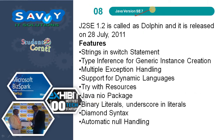Java 7 is released on 28th July 2011. Features include Strings in Switch statement, Type Inference for Generic Instance Creation, Multiple Exception Handling, Support for Dynamic Languages, Try with Resources, Java NIO Package, Binary Literals, Underscore in Literals, Diamond Syntax, and Automatic Null Handling. Notably, Switch case previously only took integers and single characters, but from Java 7 onwards it also accepts string type values.